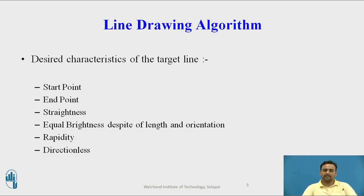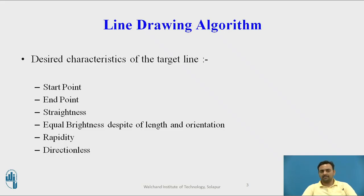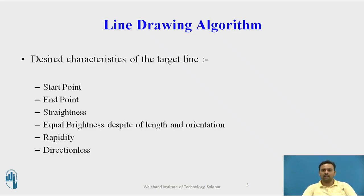The next characteristic is rapidity — it should draw the line in a very rapid manner. It should not take very long to draw the line on the computer screen. And the next one is directionless, meaning your line should be a directionless line. You can start from any point to the next end point, you can change the start point and end point, and though it should be the same line, it should be directionless so that you can draw the line in any direction.